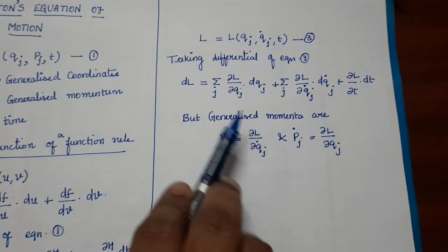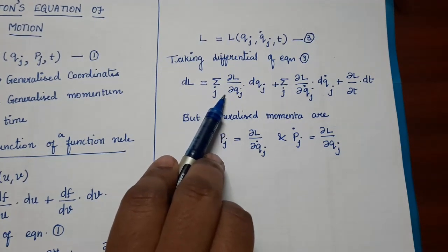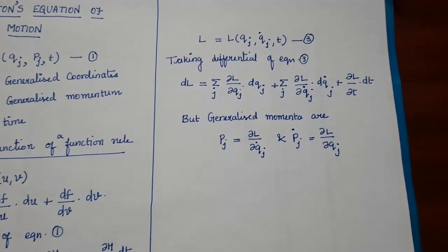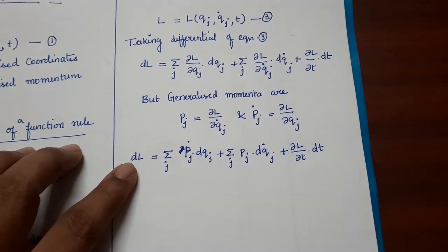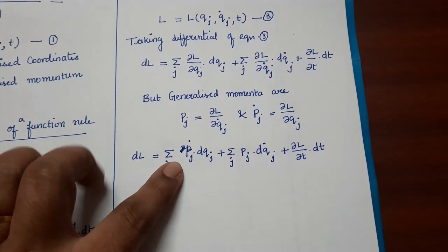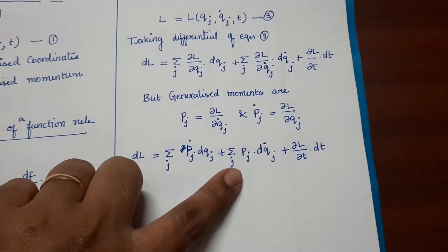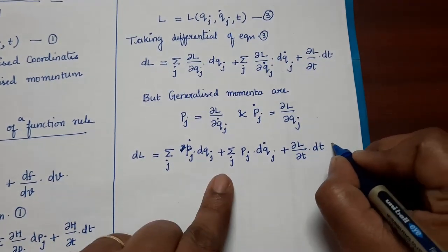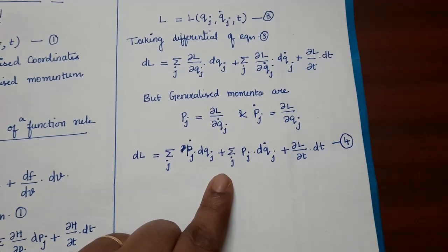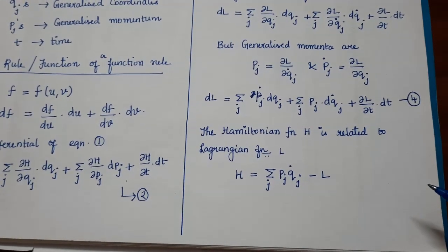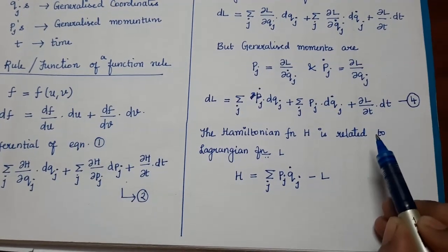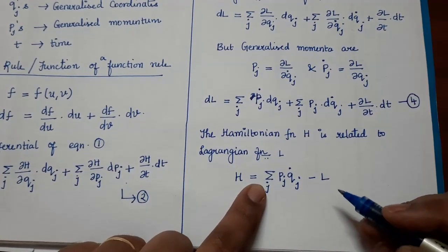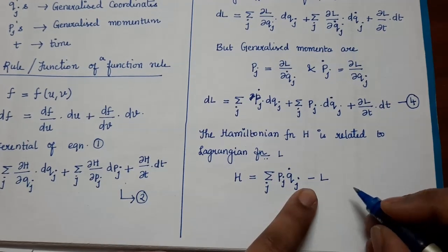Substituting these relations — pj_dot in place of ∂L/∂qj and pj in place of ∂L/∂qj_dot — we get: dL = Σⱼ pj_dot dqj + Σⱼ pj dqj_dot + (∂L/∂t) dt. Let us call this equation 4. We also know the Hamiltonian is related to the Lagrangian by H = Σⱼ pj qj_dot − L, which is equation 5.